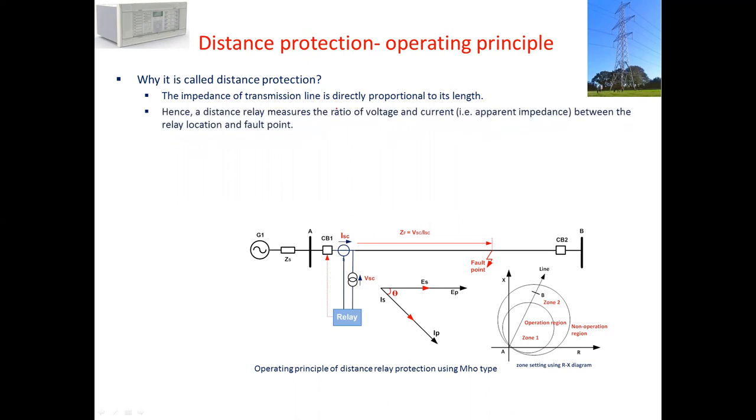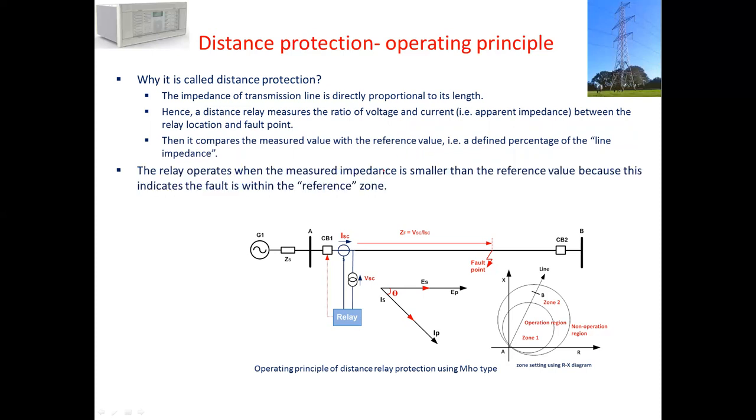A distance relay measures the ratio of the voltage to the current. When there is a fault, it measures the ratio of the voltage to the current. That is called apparent impedance between the relay location and the fault. It compares the measured value with the reference value and operates when the measured impedance is smaller than the reference value or the actual value, because this indicates the fault is within the reference zone.